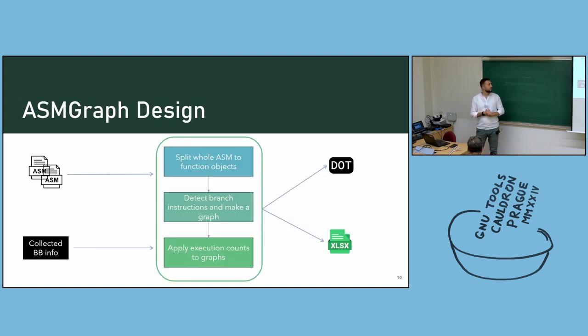Here is our simple instrument. As the input, it accepts assembly files and corresponding collected basic block information. As the first stage, our instrument splits assembly files to function objects, then parse each function and detect branch instructions. With that information, we make graph. At the end, we apply collected information for the data graphs and colorize them. As the output, our instrument provides dot graphs for each function.